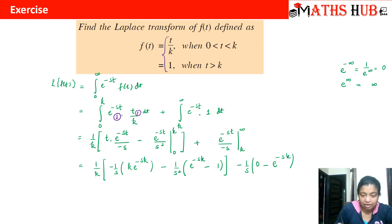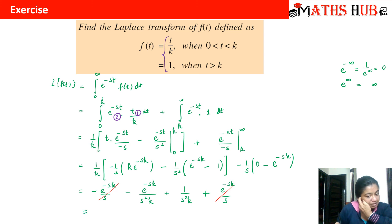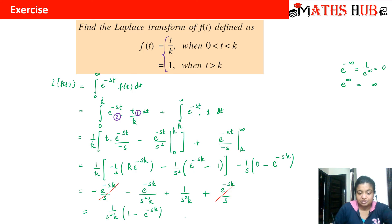Collecting all terms: we get -e^(-sk)/s, then +e^(-sk)/(s²k), then +1/(s²k), then +e^(-sk)/s. The first and last terms cancel each other out. Our final answer is (1/s²k) times (1 - e^(-sk)), which can be written as (1 - e^(-sk)) / (ks²).